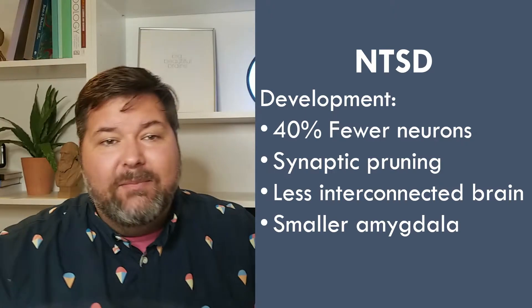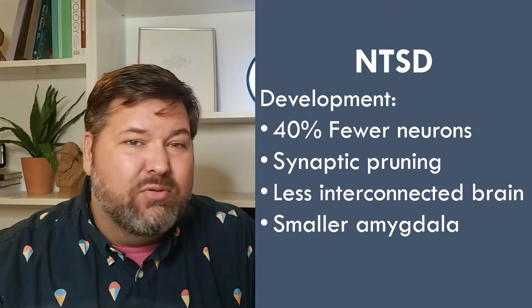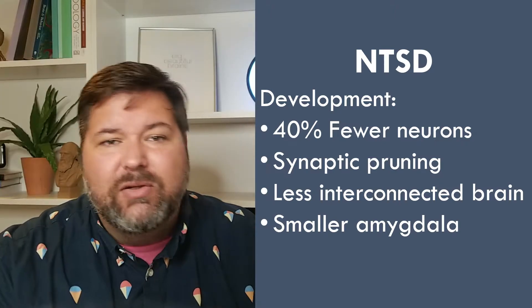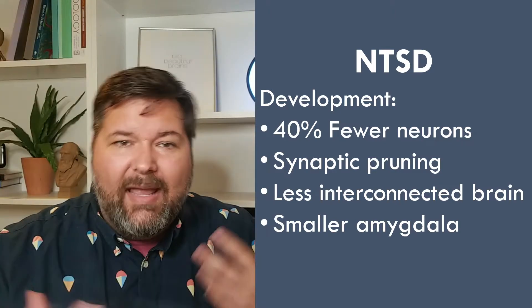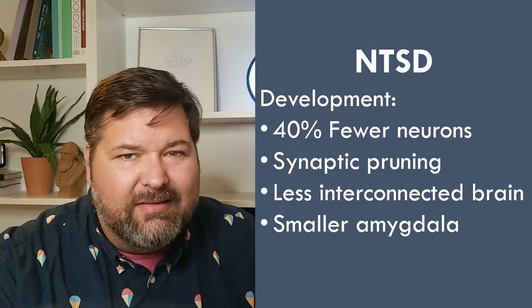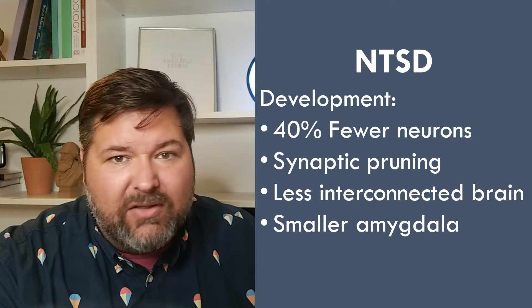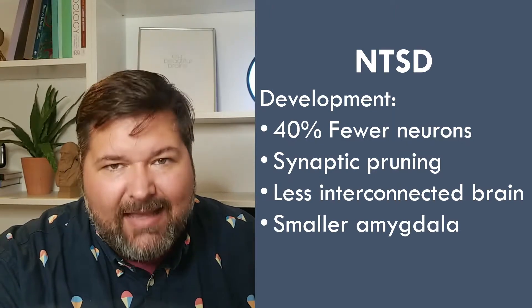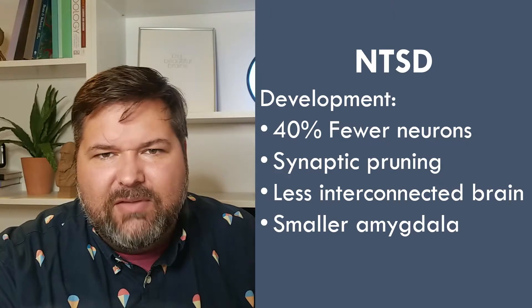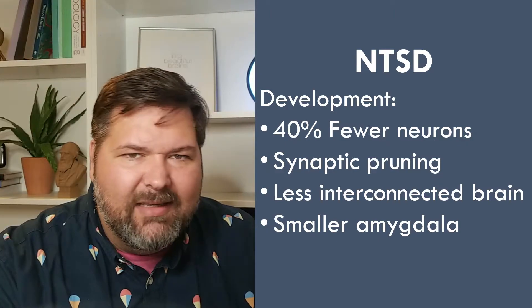During early brain development, the brain grows more slowly and produces 40% fewer neurons. Then in early childhood, the brain starts trimming away a lot of the connections between the neurons in a process called synaptic pruning, which results ultimately in a much less interconnected brain. The amygdala, a structure involved in emotional and reward processing, is shrunken. As you can imagine, these physiological changes in the brain result in some deficits in behavior as well.